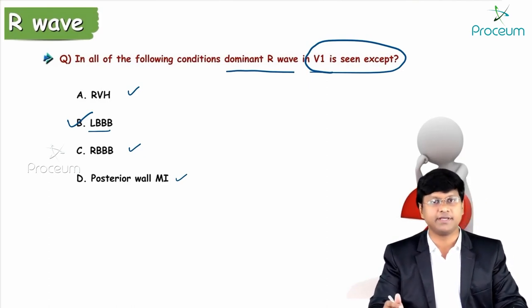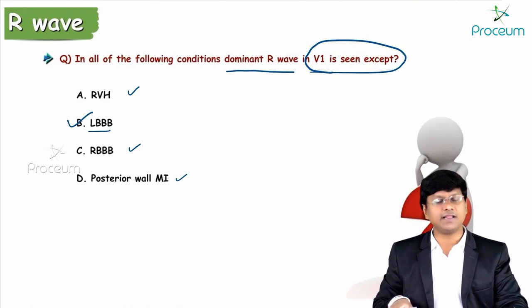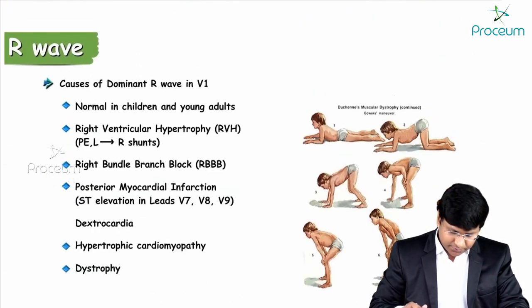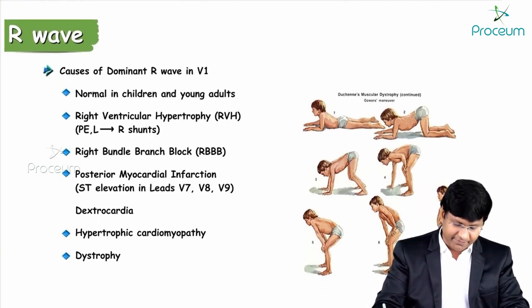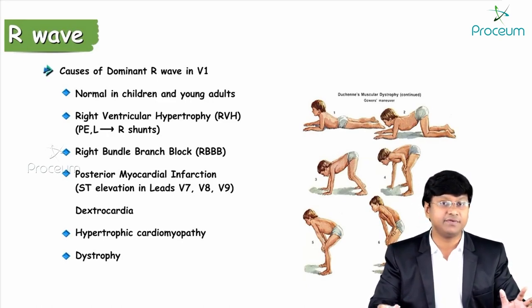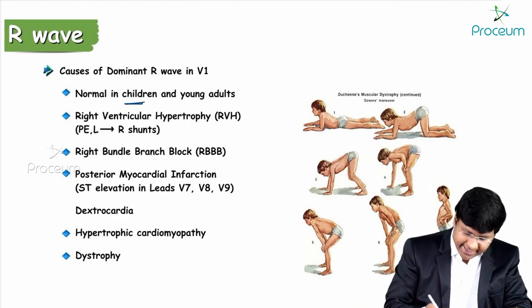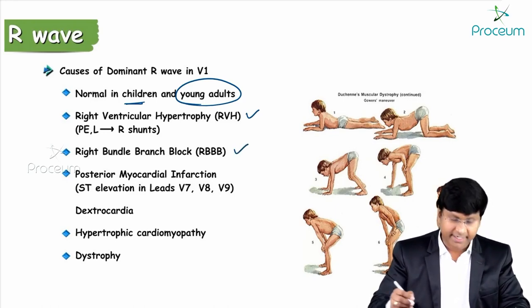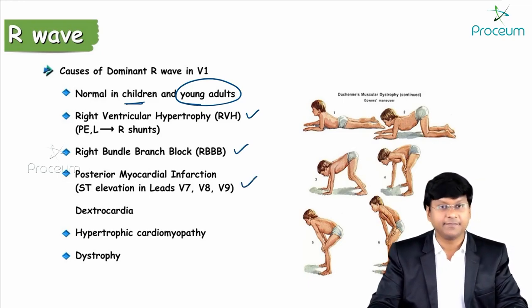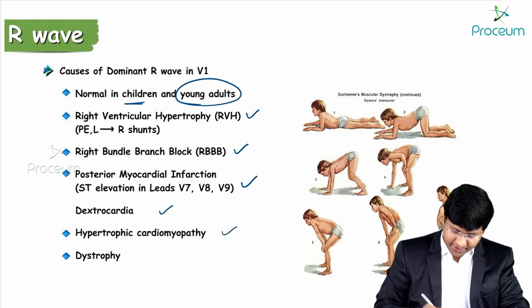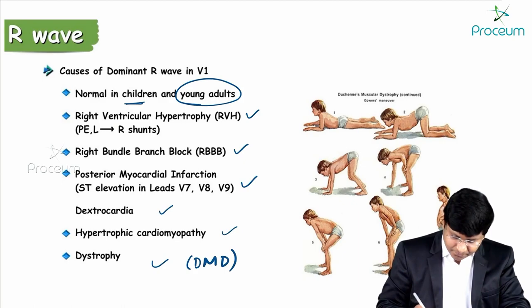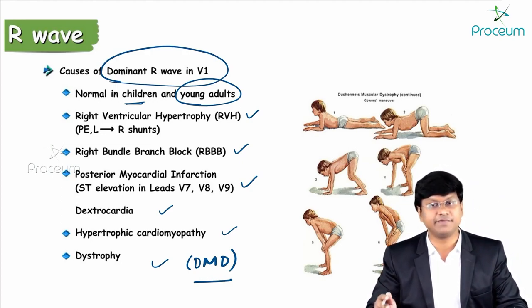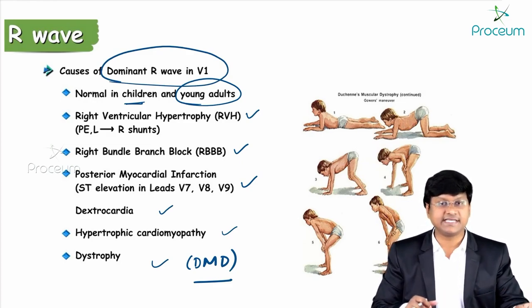In RVH, RBBB, and posterior wall MI you will have a dominant R wave in V1. All conditions causing dominant R wave in V1: physiologically in children and young adults; pathologically — right ventricular hypertrophy, right bundle branch block, posterior wall MI, dextrocardia, hypertrophic cardiomyopathy, and Duchenne's muscular dystrophy.